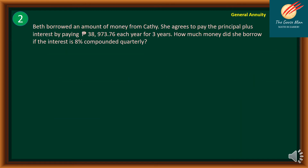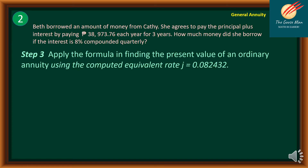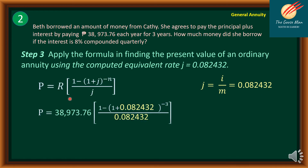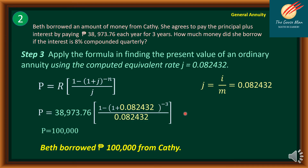Step number three: apply the formula to find the present value. J equals 8.24%, or 0.082432. Using the present value formula with R equals 38,973.76, J equals 0.082432, and N equals 3, the present value P is approximately 100,000 pesos. Therefore, Beth borrowed 100,000 pesos from Kathy.